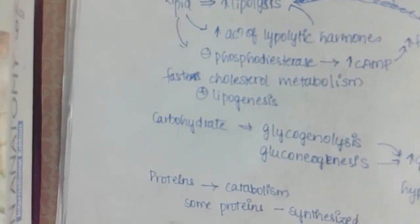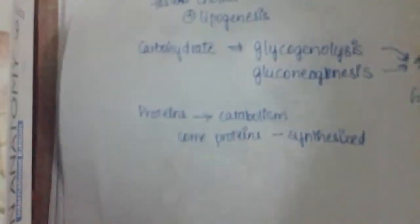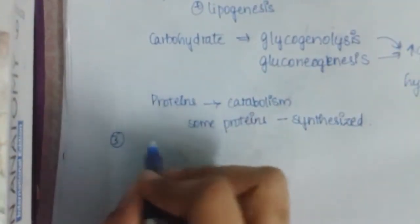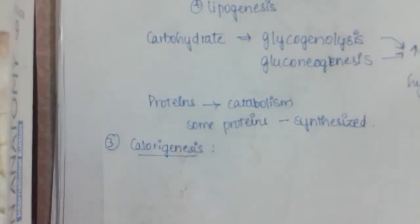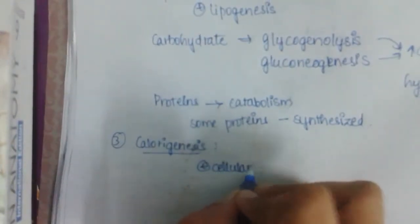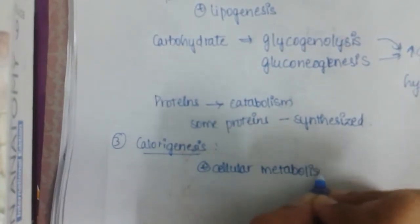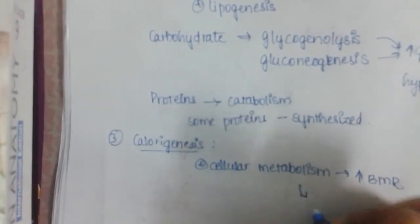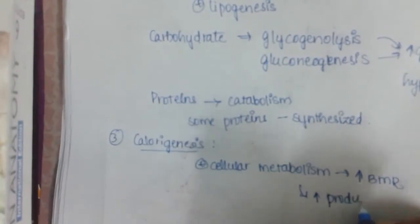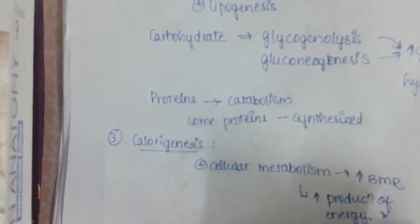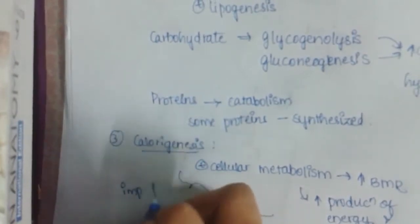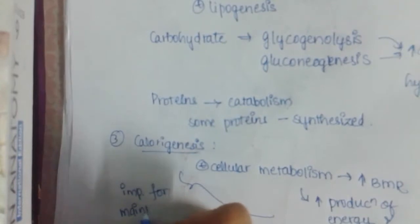The third action of thyroid is calorigenesis. It increases the basal metabolic rate by stimulating cellular metabolism. This cellular metabolism also increases production of heat and energy, and excess energy as heat. This process is really important for maintaining body temperature.